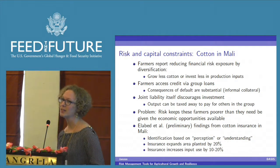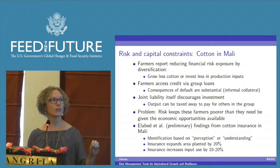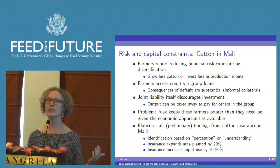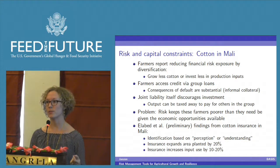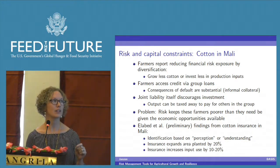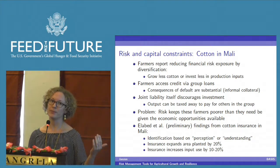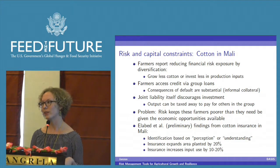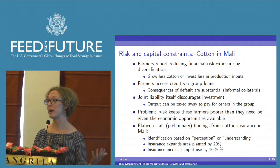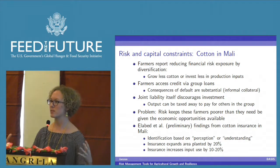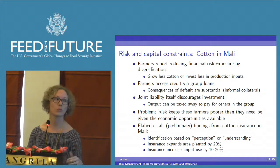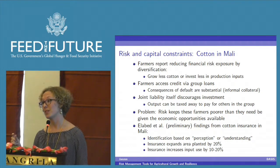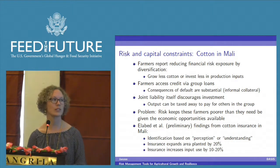Example one: cotton in Mali. Farmers in Mali report reducing financial risk exposure by diversification. Cotton is a higher-return investment, but it comes with higher levels of risk. Farmers say they don't want to take that extra risk, so they'll grow less cotton or invest less in productive inputs. Farmers don't invest in the full package because they want to minimize their risk.